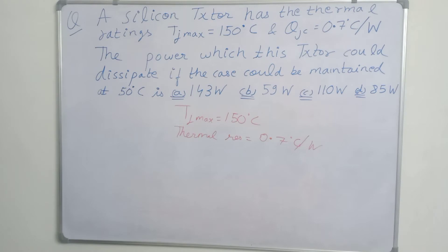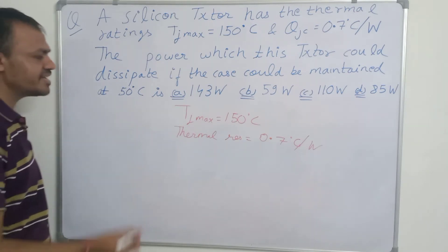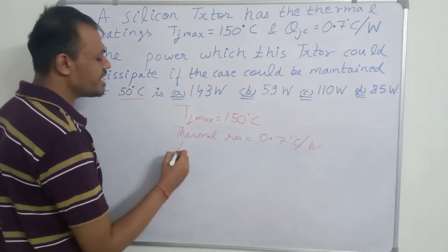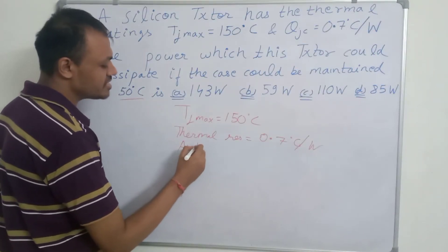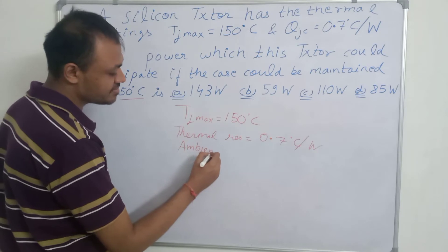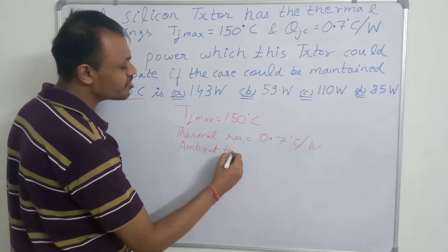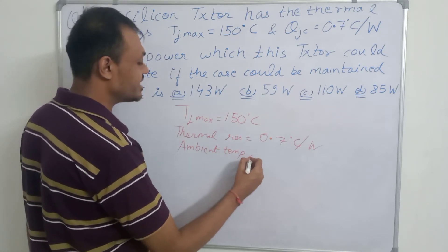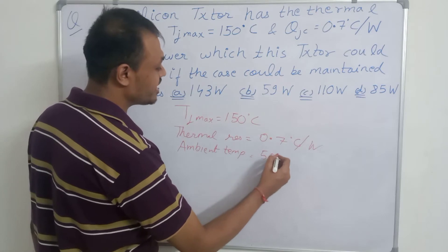We have to find the power which this transistor could dissipate if the case could be maintained at 50 degree Celsius. The ambient temperature is given to us as 50 degree Celsius because we have to maintain the case at that temperature.